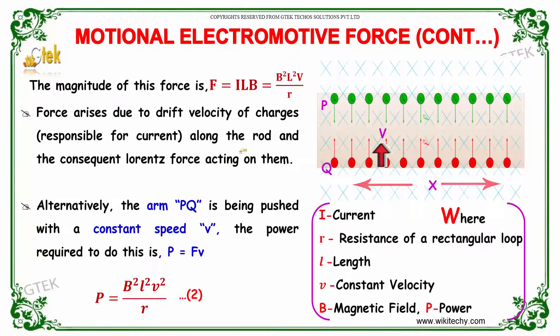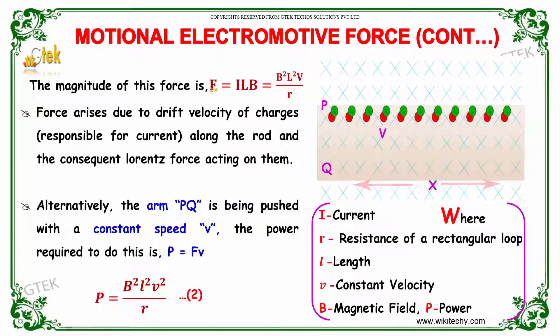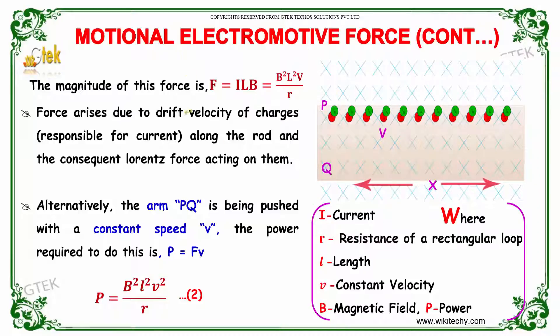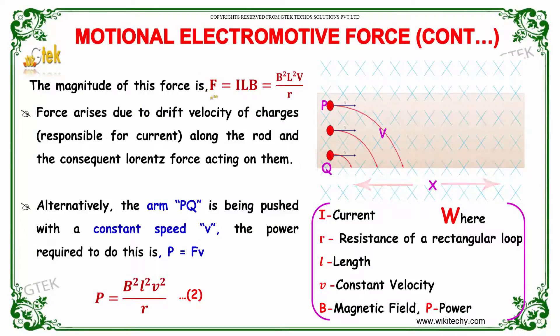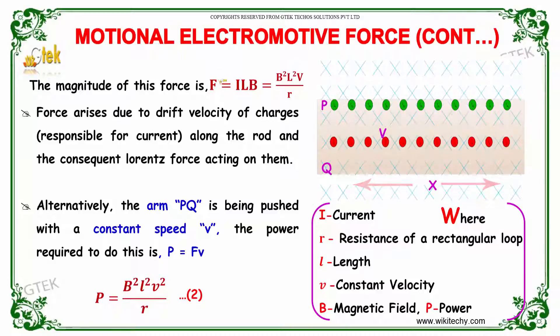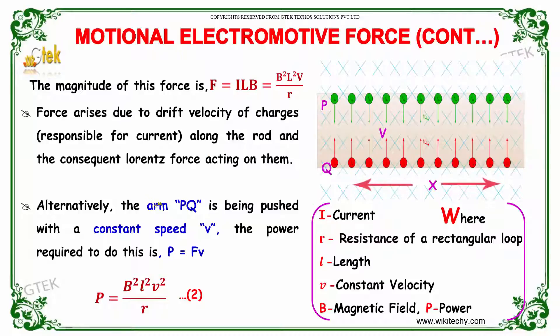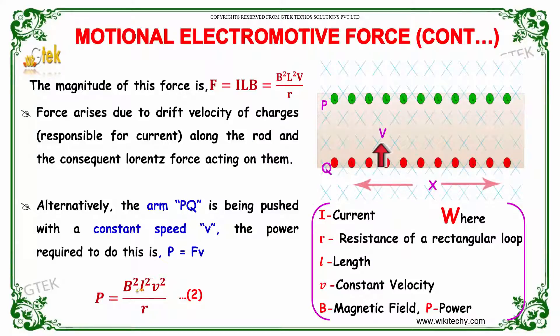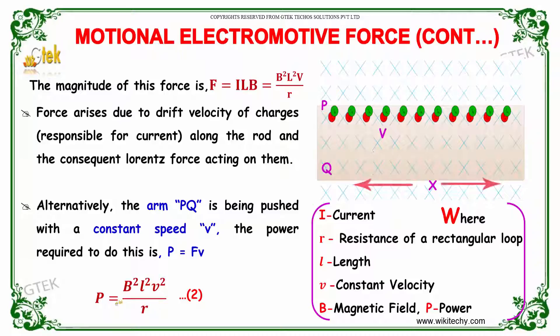The magnitude of the force is given by F equals I into L into B. Replacing I, you will be getting B square L square V divided by R. The force arises due to the drift velocity of charges along the rod and the consequent Lorentz force acting on them. Alternatively, if the arm PQ is being pushed with a constant speed V, the power required to do this is P equals F into V. So F equals B square L square V divided by R, so we will be getting B square L square into V square divided by R. That's P.